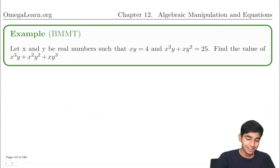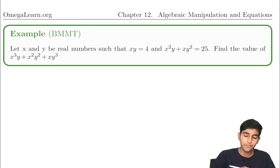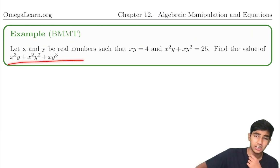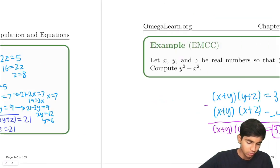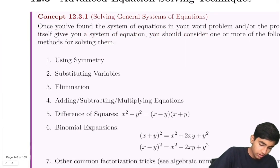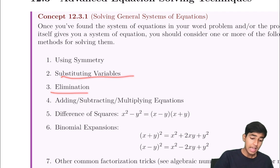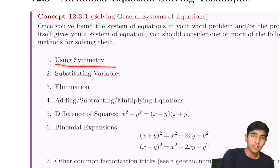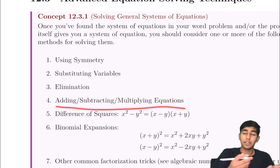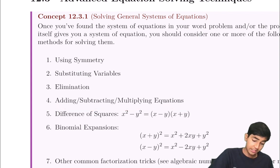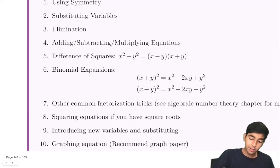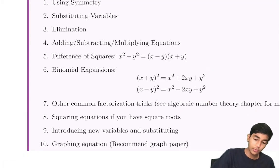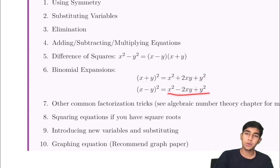Another problem, this one from BMMT. Let x and y be real numbers such that xy equals 4 and x squared y plus x y squared equals 25. Find the value of that expression. Here's a list of key techniques: substituting variables, elimination, using symmetry, adding/subtracting/multiplying equations, difference of squares, and binomial expansions — x plus y squared equals x squared plus 2xy plus y squared; x minus y squared equals x squared minus 2xy plus y squared.